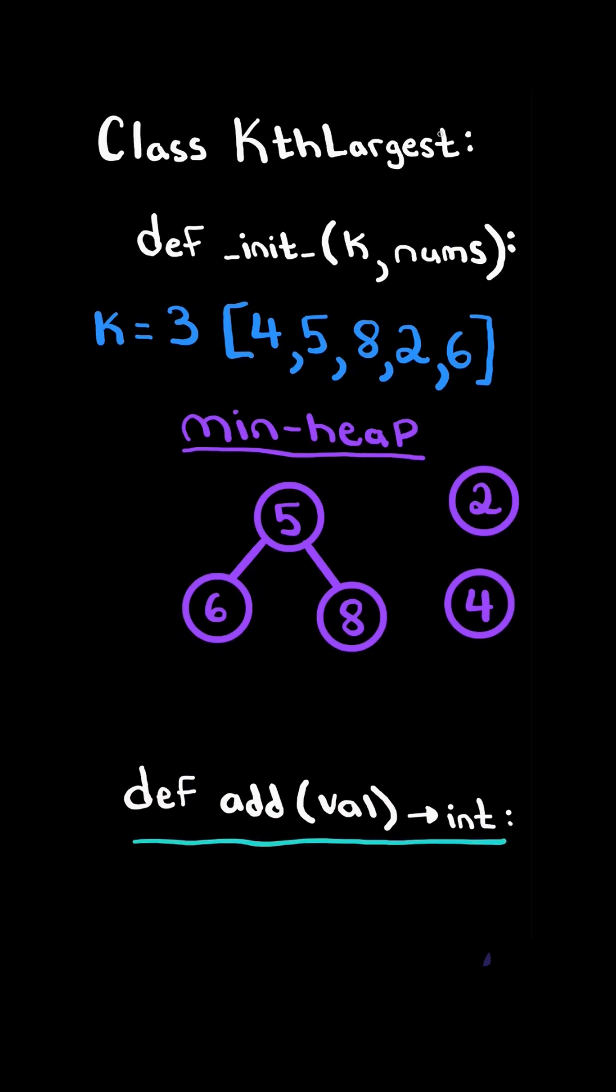Now let's focus on the add method. If we want to add the value 1, we will add the value to the end of our heap. To maintain the heap's properties, if the parent is larger, we swap. And again the parent is larger, so we swap. Now the heap's properties are satisfied.